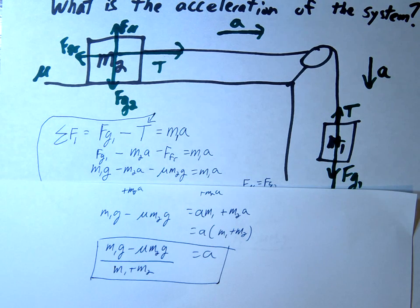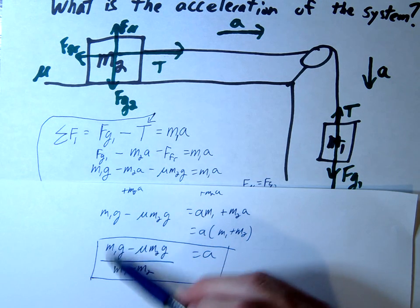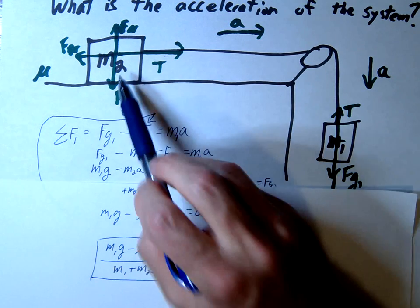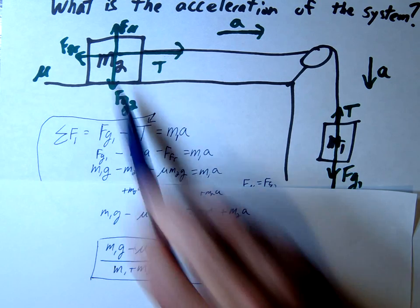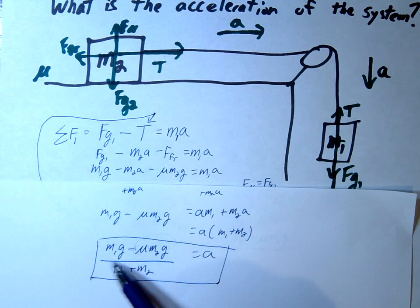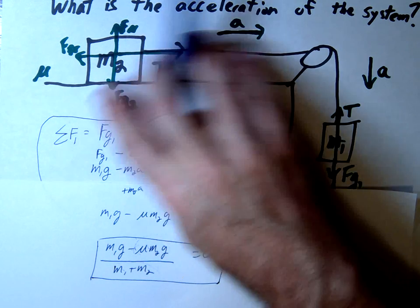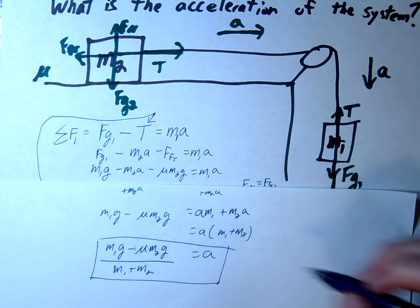There's our acceleration. Notice conceptually what's happening: m1g is the weight of the hanging mass pulling down. We subtract friction from the table, then divide by the sum of both masses since they're moving together as a system.